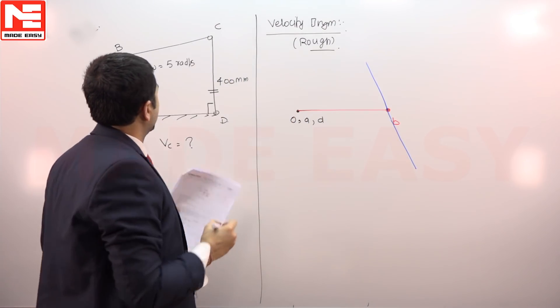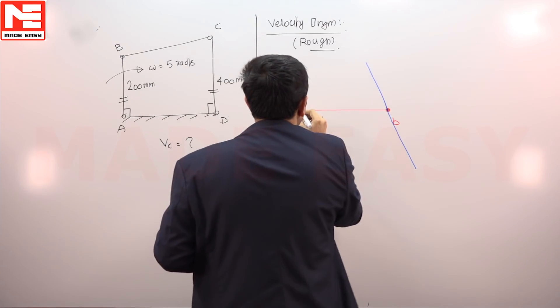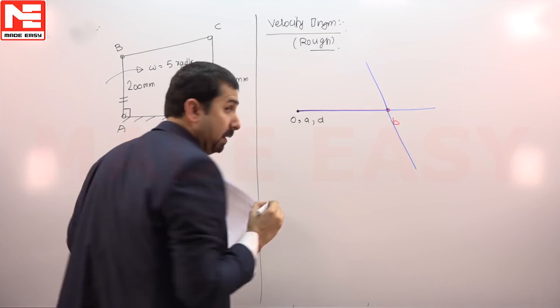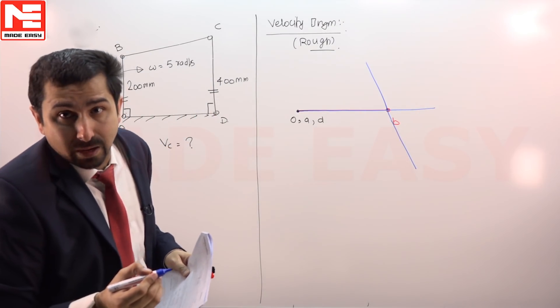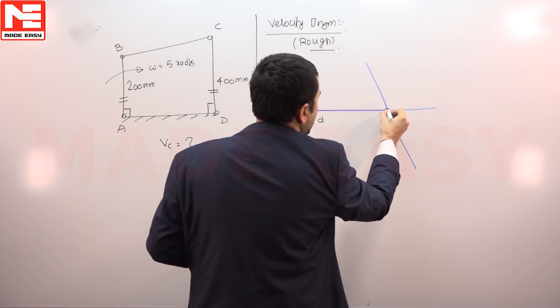If we are going to plot C with respect to D, we have to plot a line perpendicular to link CD. This perpendicular to link CD will come exactly the same as perpendicular to link AB because both of the links at this moment are parallel. The point which is lying in this line as well as in this line is only this.